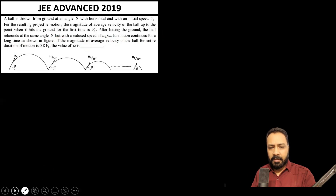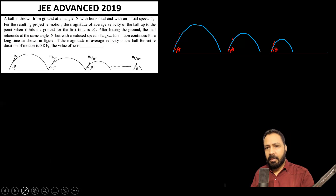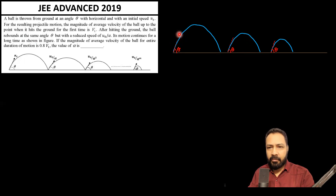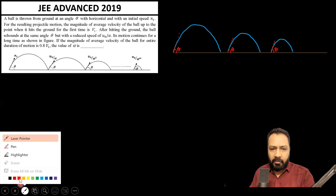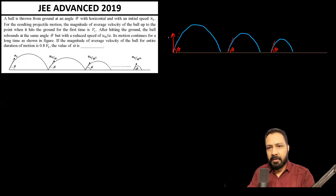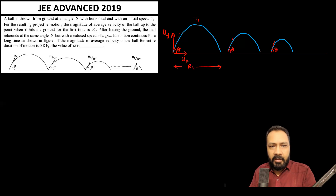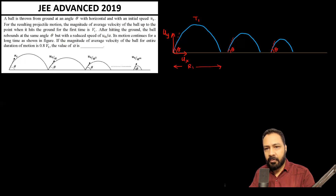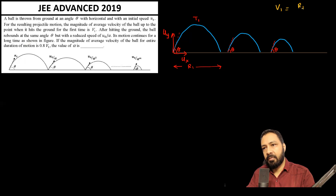Let's solve this. Here is the diagram — I've kept a little gap between the striking and rebounding from the ground. The particle is thrown with velocity u-naught at angle theta. The y-component of initial velocity is u_y and the x-component is u_x. Till it hits the ground for the first time, the time of flight is t1 and horizontal range is r1. The average velocity v1 equals r1 divided by t1 — that's our first equation.